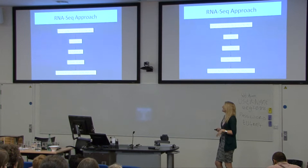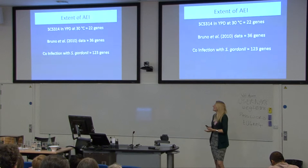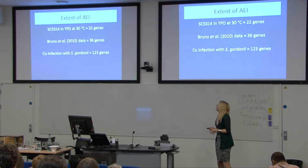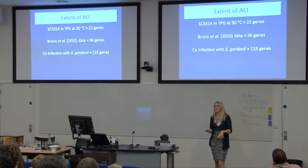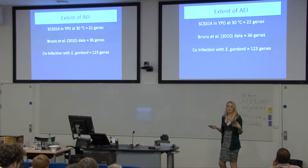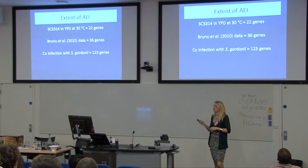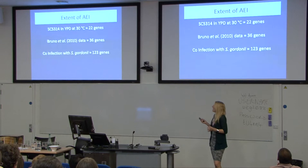These allele-specific counts were then compared statistically in three different ways to identify genes with significant levels of AEI. I used three different datasets: one collected in-house using the wild-type strain SC5314 in rich media, and data downloaded from Vincent Bruno's group, which performed RNA sequencing under a number of infection-relevant conditions. Both of these used older Illumina GA2 sequencing data with shorter, single-end reads, which explains why only 22 and 36 genes respectively were identified as having significant AEI.